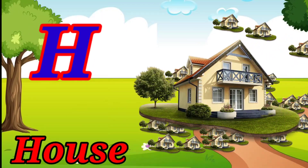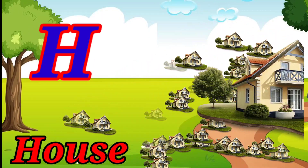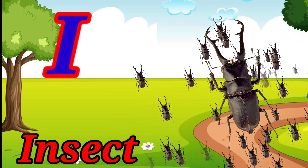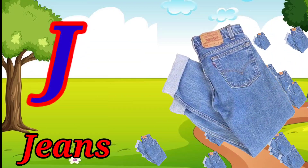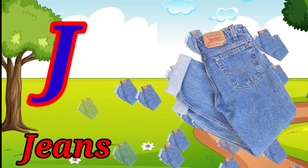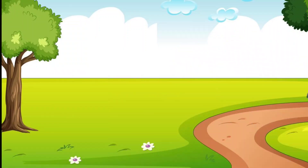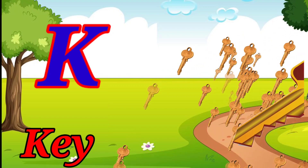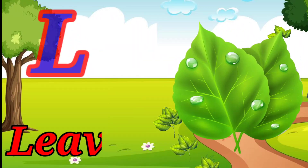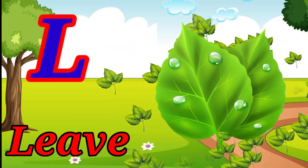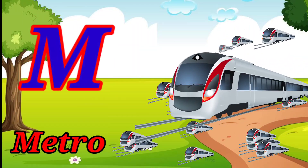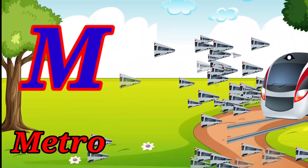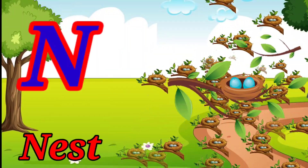H for house, I for insect, J for jeans, K for key, L for leaf, M for metro, N for nest.